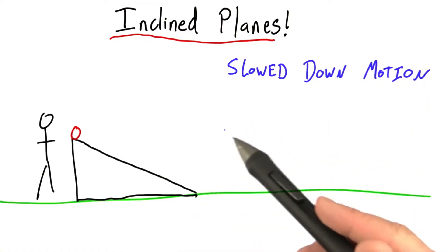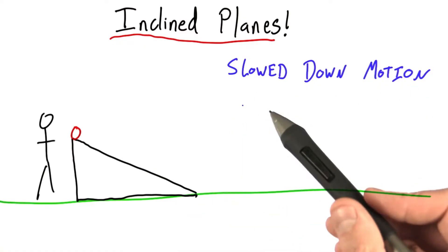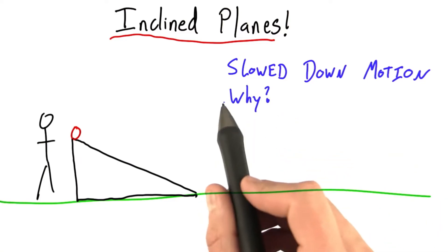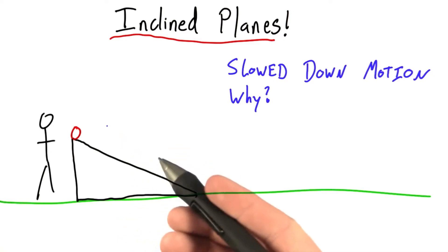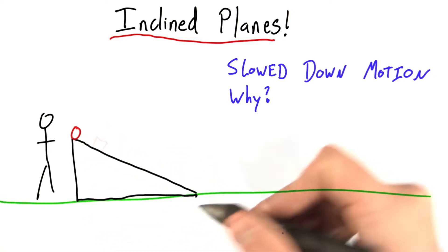allowed him to make some measurements and observations that he couldn't have made with just objects in free fall. The question, though, is why did rolling balls down an inclined plane slow down their motion? Sure, it seems sort of obvious, but let's analyze it.